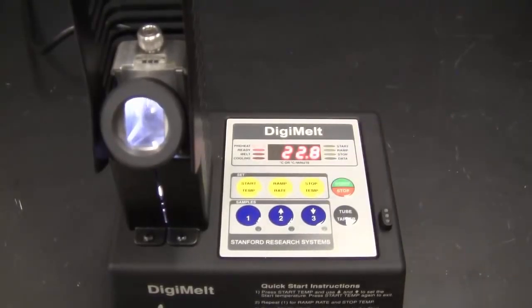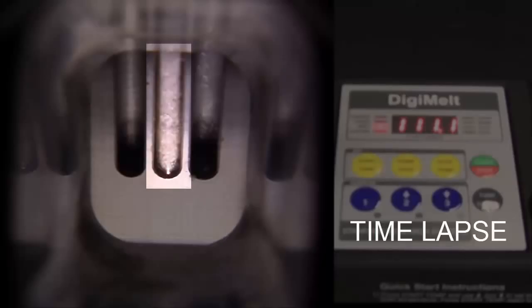The temperature will rise slowly and you can view the sample through the lens on the front. Watch the sample carefully. When you first see signs of melting in your sample, write the temperature down.